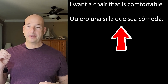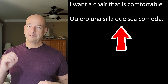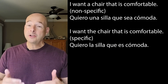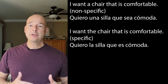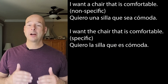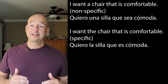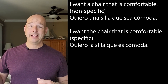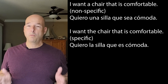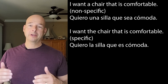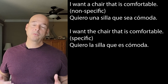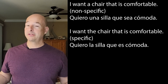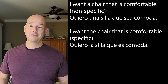But let's say I'm talking about a specific item. Let's just make a very small change to our sentence. I want the chair that is comfortable. Quiero la silla que es cómoda. We're back to the indicative, also known as the plain old present tense. Es. And why? Because we're talking about a specific chair. That's why it doesn't work just to say if I see que, I know I'm going to use the subjunctive — that's not true. You have to look for that trigger.